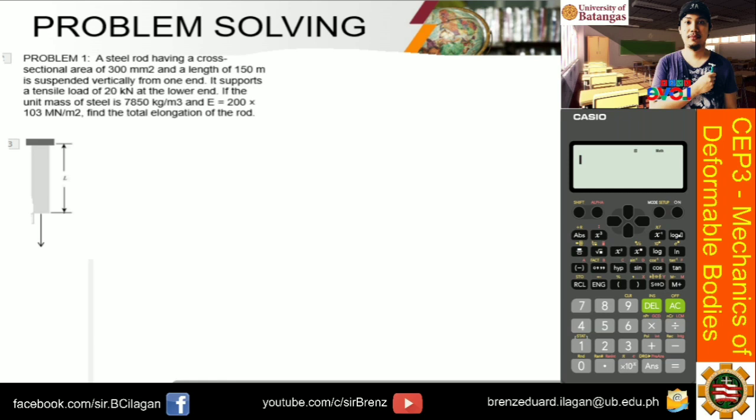Let's read the problem. A steel rod having a cross-sectional area of 300 mm² and a length of 150 meters is suspended vertically from one end. It supports a tensile load of 20 kilonewtons at the lower end. If the unit mass of steel is 7850 kg per cubic meter and E is given as 200 times 10³ megapascals, find the total elongation of the rod.